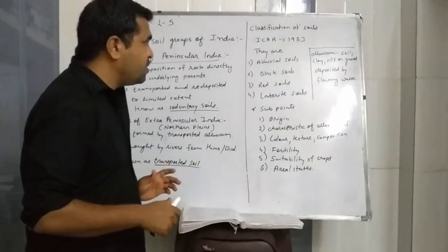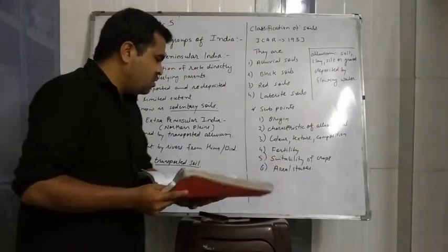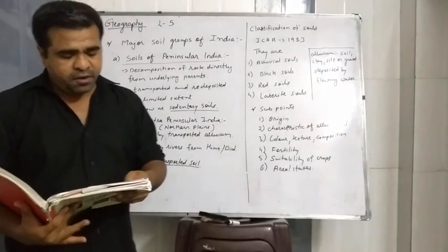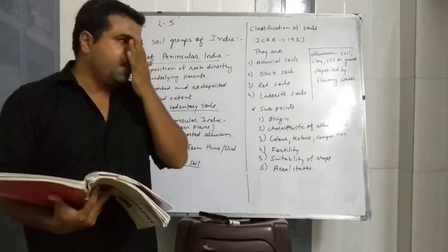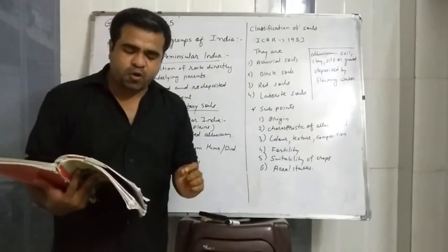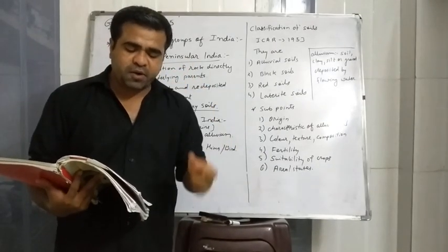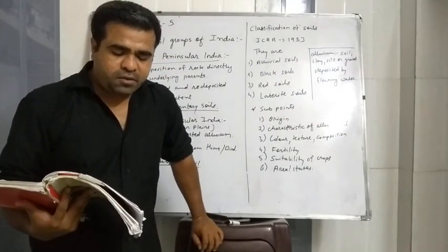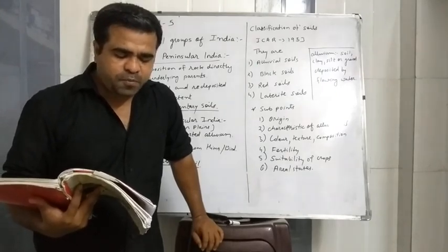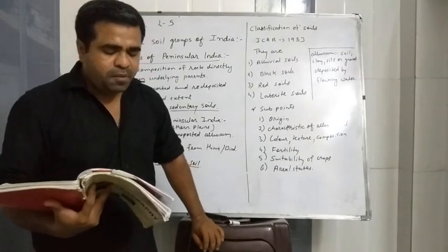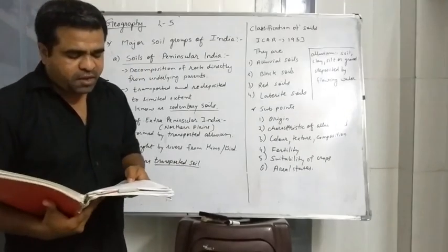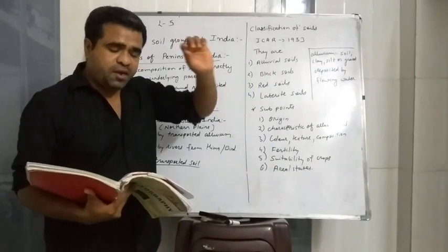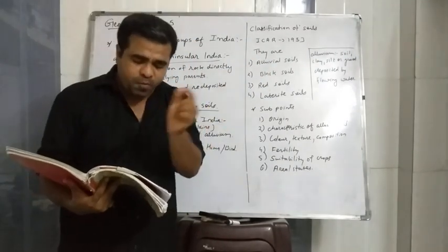First, let's talk about alluvial soil. It covers about 15 lakh square kilometers, which is 45.6% of total land in India. It is the most important soil and supports the maximum share of agriculture products and the bulk of the Indian population.